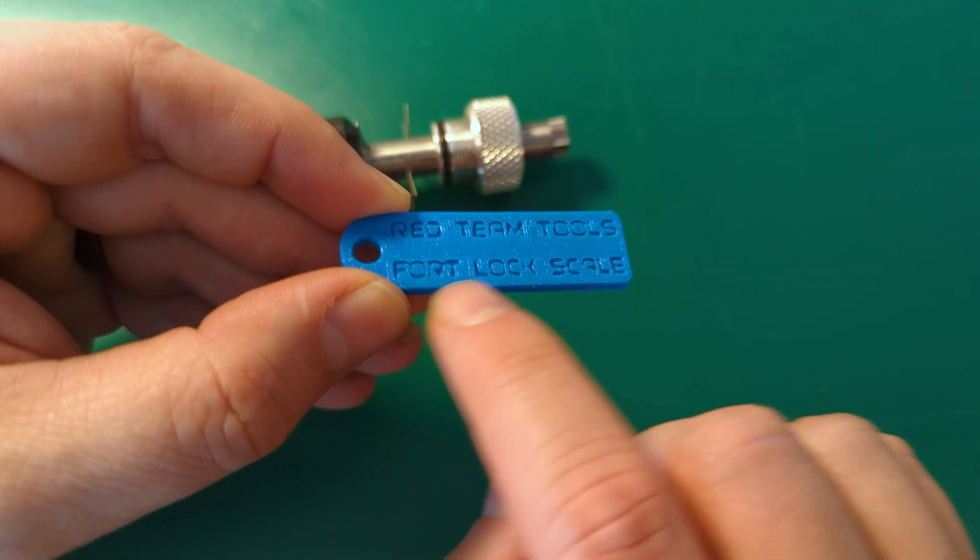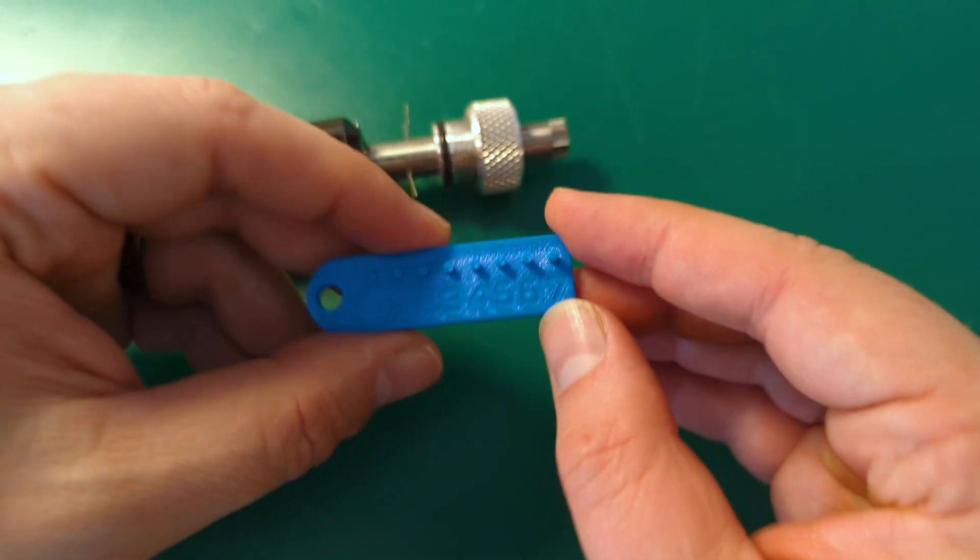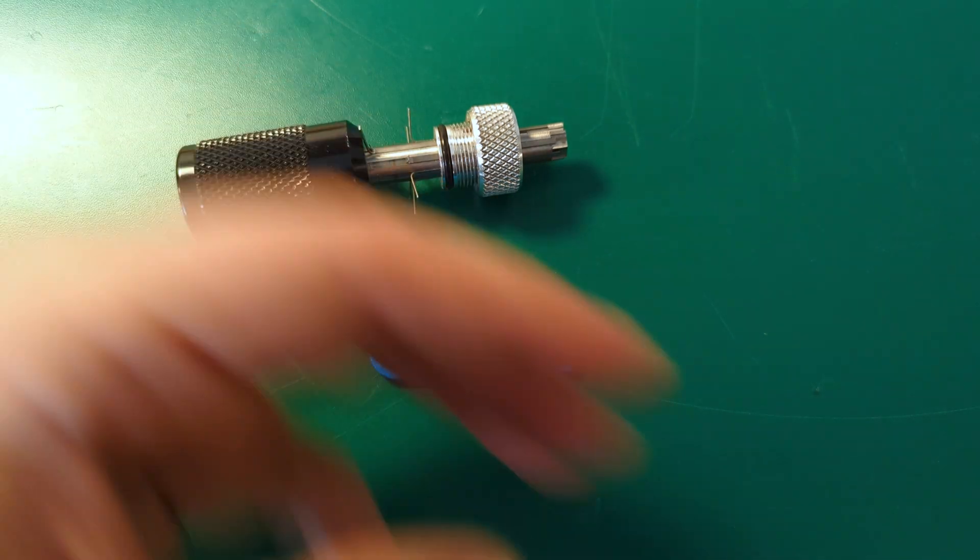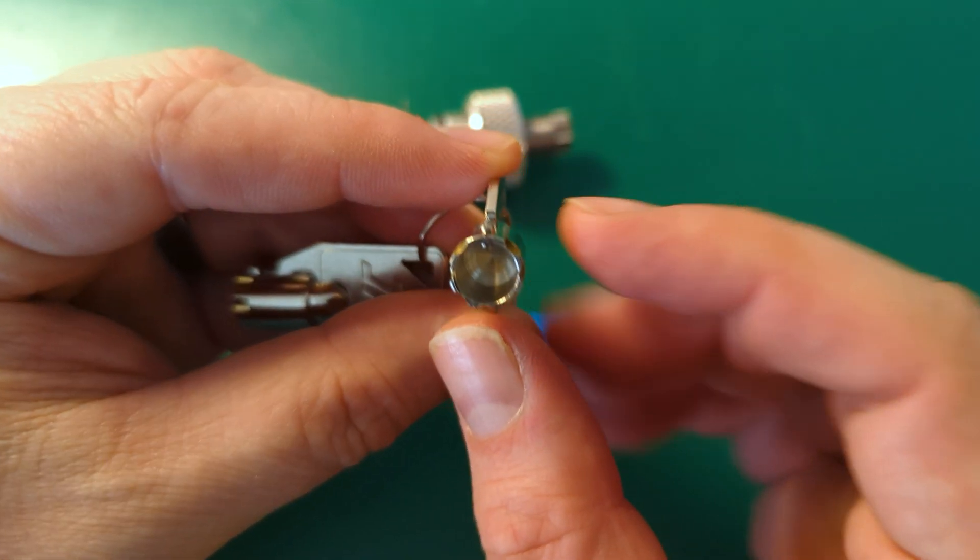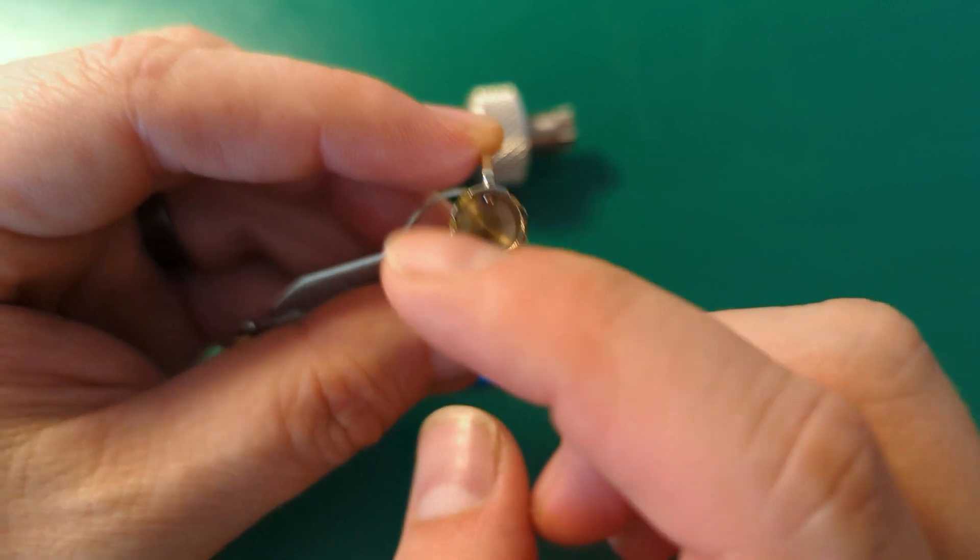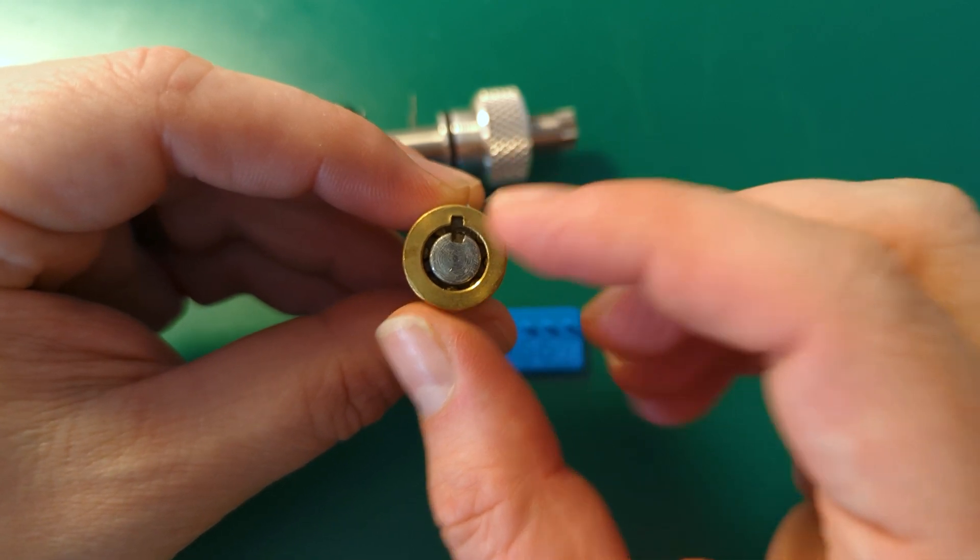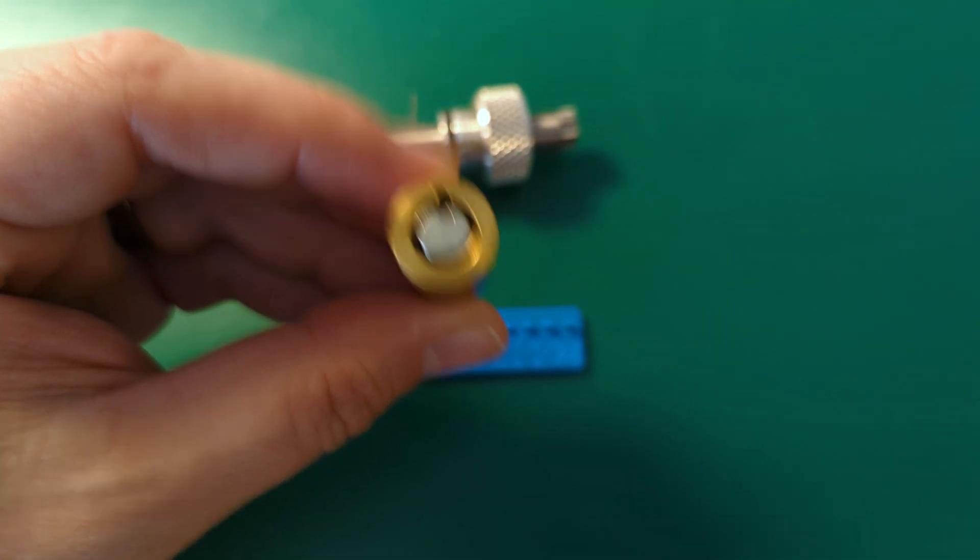So yeah, this one clearly says Fort lock scale, because that's the way I tend to work. If you're looking at a tubular key, you look at the front of the key and the Fort lock scale goes around clockwise from the key, as opposed to the old Ace lock scale, where we would look clockwise around the lock face.